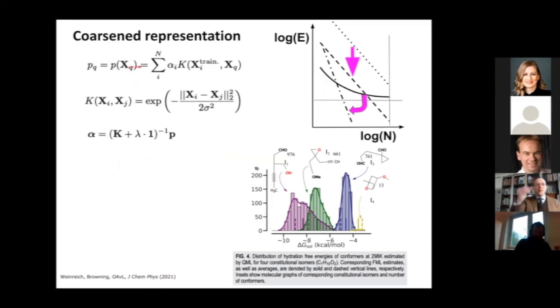This is a different paper. It just came out last week where we looked at learning free energies. In particular, we realized there are some properties where, and free energies are among them, you would require a coarse-grained representation. This tells you a frequency analysis of different conformers and the molecular graphs are plotted here. These are different molecules and they have different conformers.